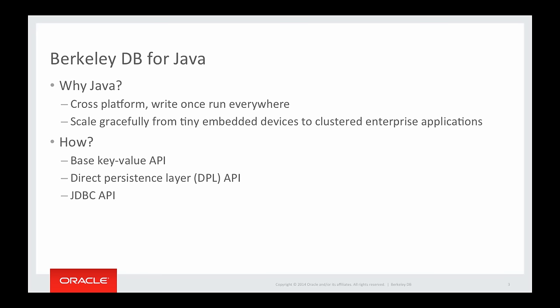So why do Java and Berkeley DB fit together? Both Java and Berkeley DB have excellent cross-platform support, so you can continue to enjoy the write-once, run-everywhere model most Java applications enjoy. Both Java and Berkeley DB cover a big range of devices — they both work on tiny embedded devices and on clustered enterprise applications, so you can deploy both on a wide range of devices.